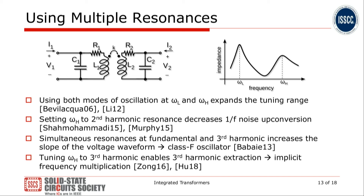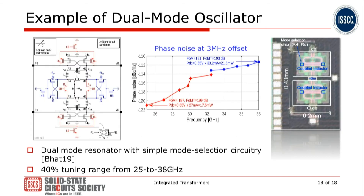As an example of these techniques, we look at a paper presented at ISSCC 2019 that describes an oscillator capable of operating at both resonance frequencies offered by a transformer-based resonator. The result is an impressive 40% tuning range at millimeter wave frequencies with very good phase noise.